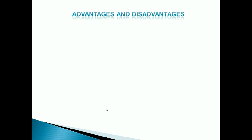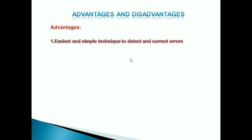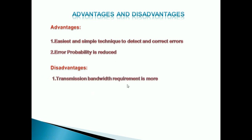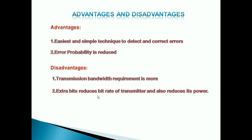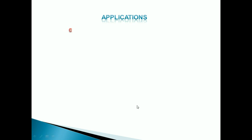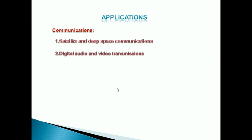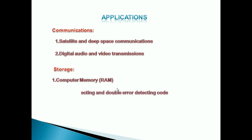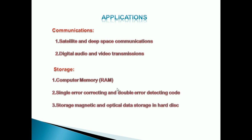The advantages of linear block codes are that they are the simplest technique to detect and correct errors, and they reduce error probability. The major disadvantage is that the transmission bandwidth requirement is very high, and extra bits reduce the bit rate and power of the transmitter. Applications include satellite and deep space communications, digital audio and video transmissions, computer memory, single error correcting and double error detecting codes, and magnetic and optical data storage in hard disks.